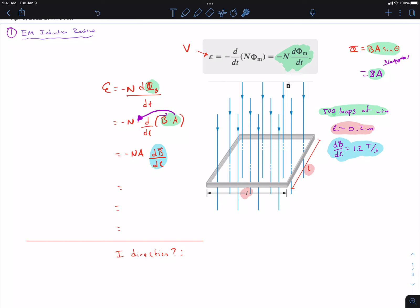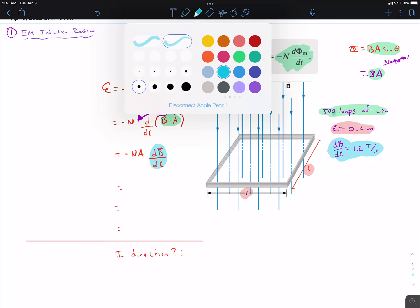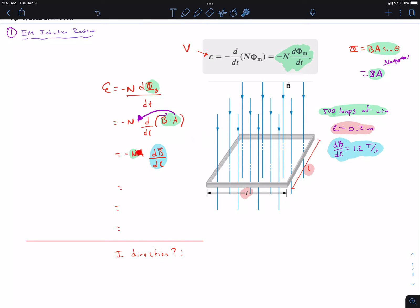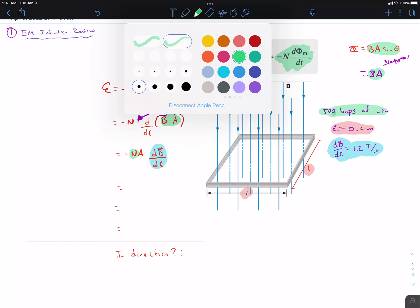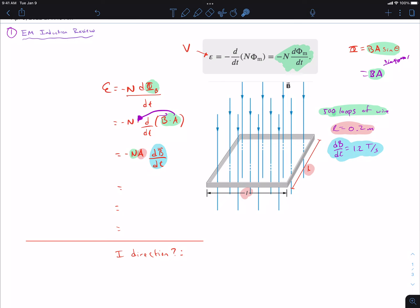So as an example, we have 500 loops of wire, this N is 500 loops, and I have my area here - I've got a side of 0.2. Now to get my area, to find my area, this is actually going to be length times length, because it's square, so it's going to be 0.2 squared, which should give me 0.04. So I can just go ahead at this stage, we're pretty much ready to plug everything in. This should give me negative 500 times 0.04 times, and then here, every second my magnetic field will change by 1.2 tesla. It'll increase.